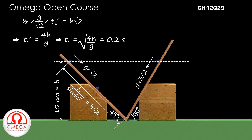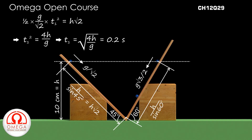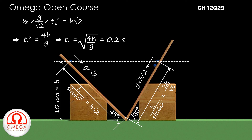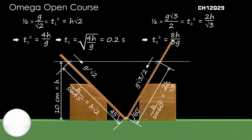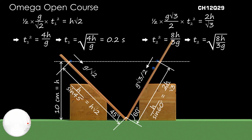Similarly, the length of the path on the right incline travelled by the particle is h/sin 60° or 2h/√3. If t2 is the time the particle takes to travel from the top to the bottom, then (1/2)(g√3/2)(t2²) = 2h/√3, or t2² = 8h/3g. This implies t2 = √(8h/3g). Putting in the values, we get t2 = 0.163 seconds.